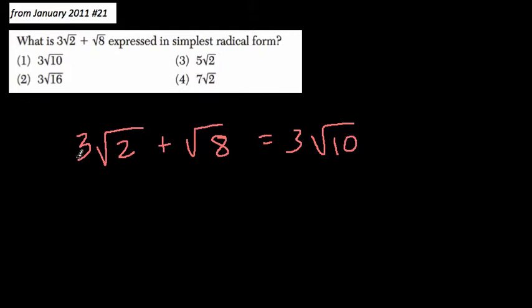So here it says what is 3 times the square root of 2 plus the square root of 8. Don't fall into that trap. Notice they put it as the first choice that this is equal to 3 square root of 10, where they want you to think, oh, it's 3 plus nothing here it's 3, and 2 plus 8 is 10, but this does not work.